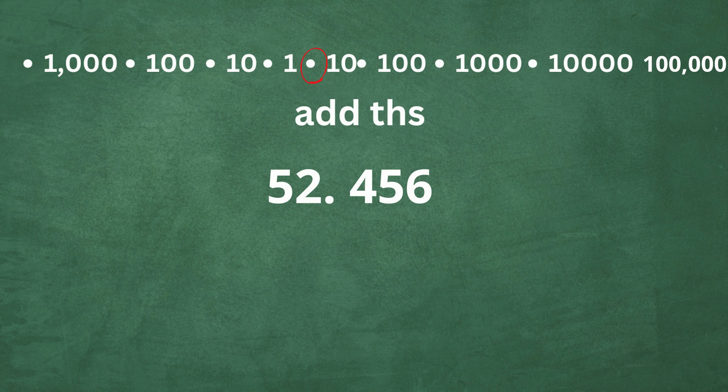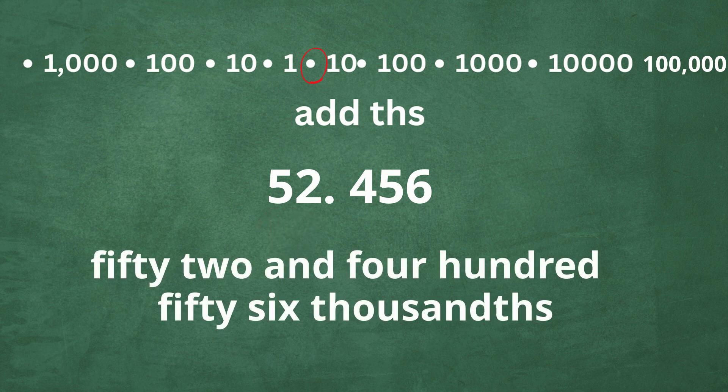So let's go through an example. First, to the left of the decimal, you have ones and tens. So it is fifty-two and.